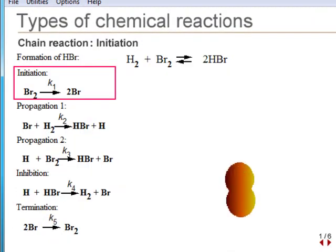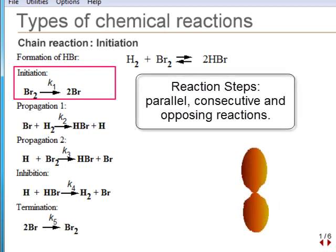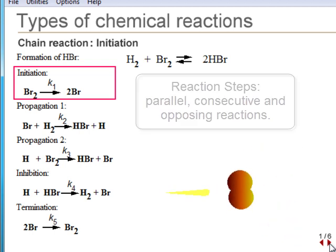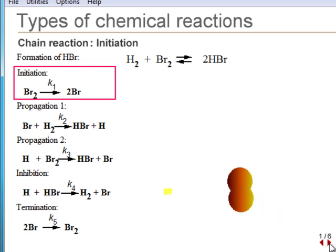Most chemical reactions have fairly complicated mechanisms, but the steps are usually the common ones we have already seen. Some are composed of parallel reactions, some are consecutive, others are opposing reactions, some are rate-determining. Here is an example of a chain reaction showing the steps.